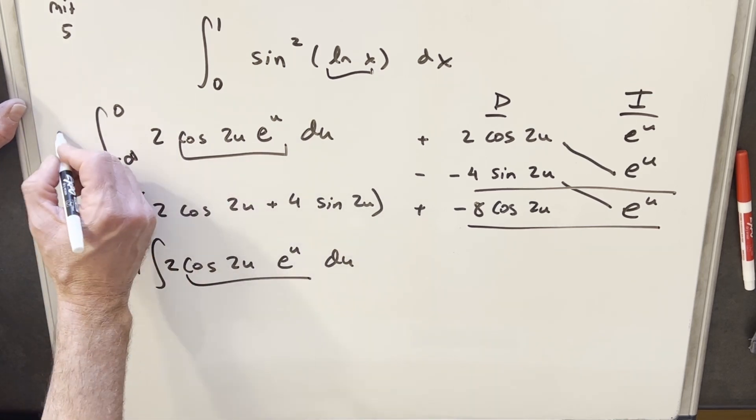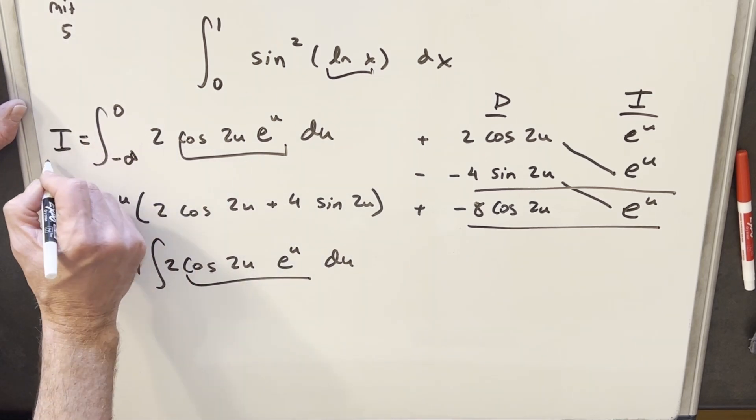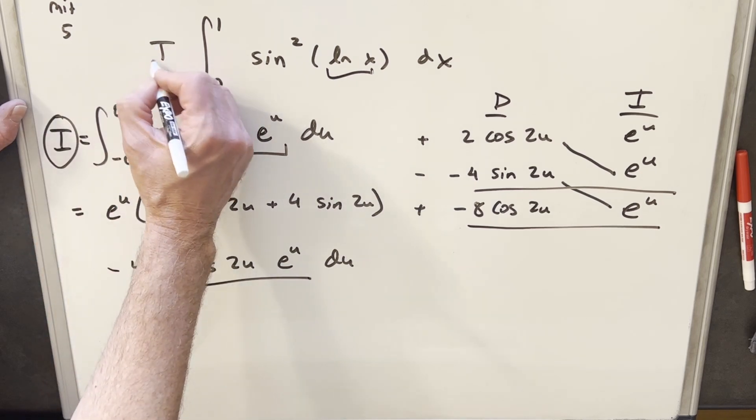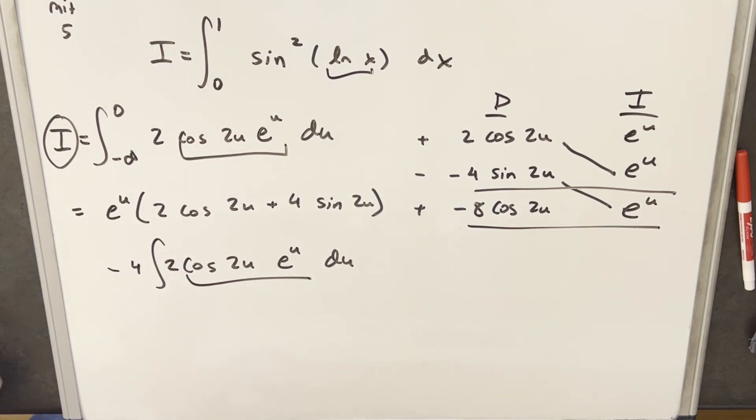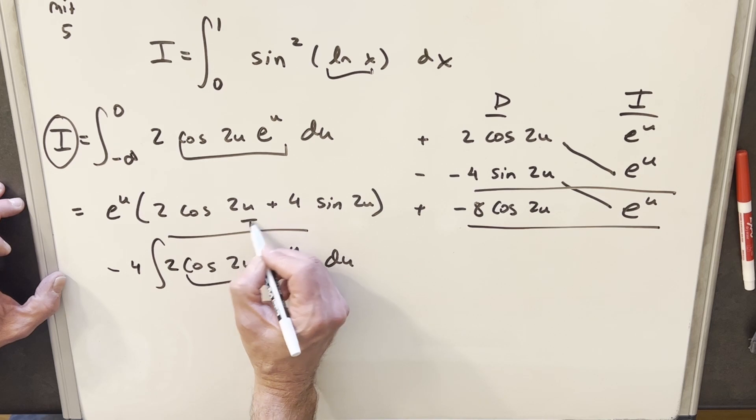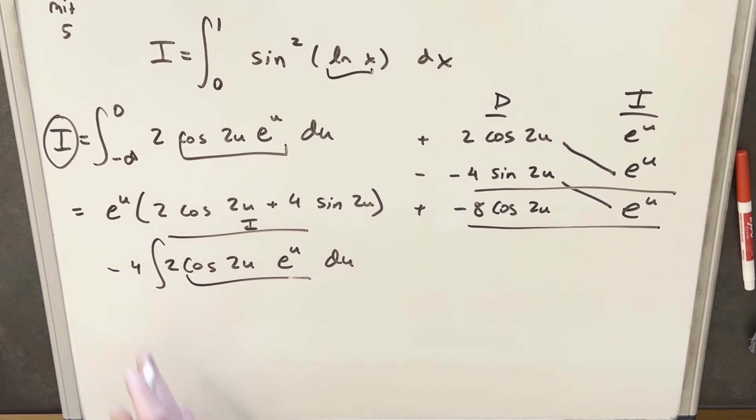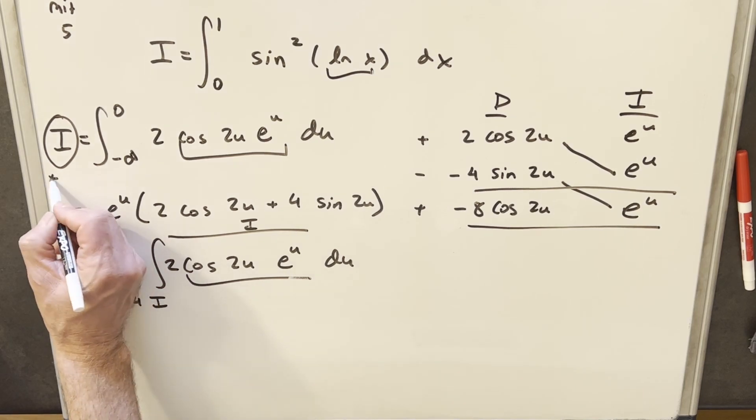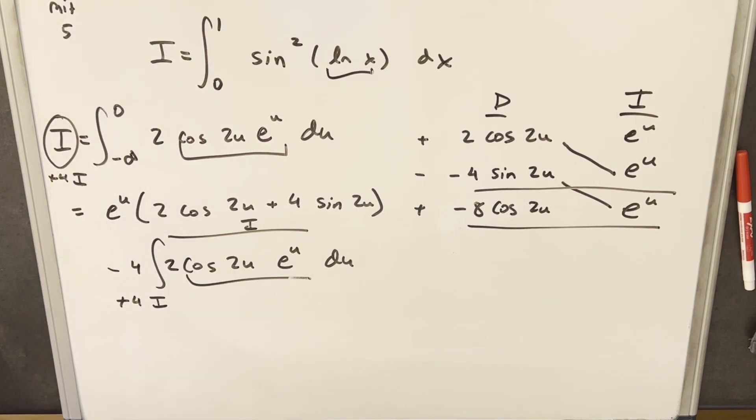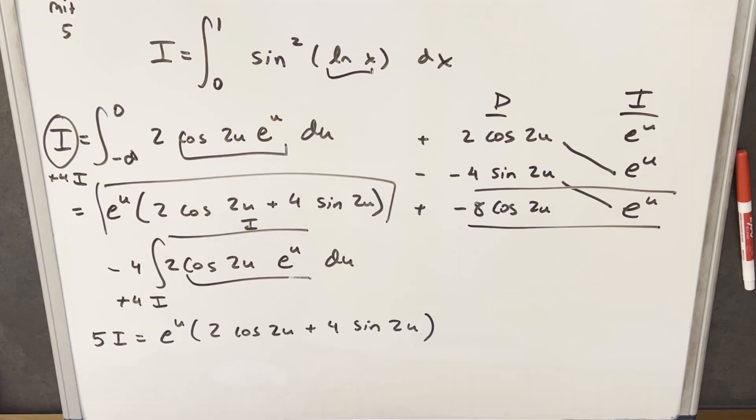Now what I'm going to do, we'll call our integral here I. This is the thing we want to find, right? Because this is the same thing as this I right here. But then this whole thing here is also I. And we have minus 4 of them. So what I'm going to do is we'll add 4I on both sides of this equation. So just to make it clear, 4I plus I, we're going to have 5I equals this part right here.